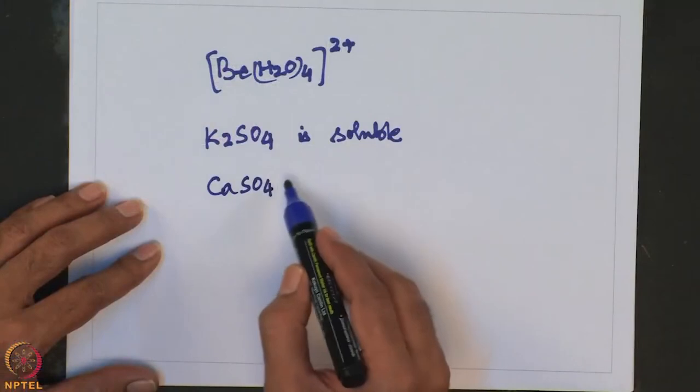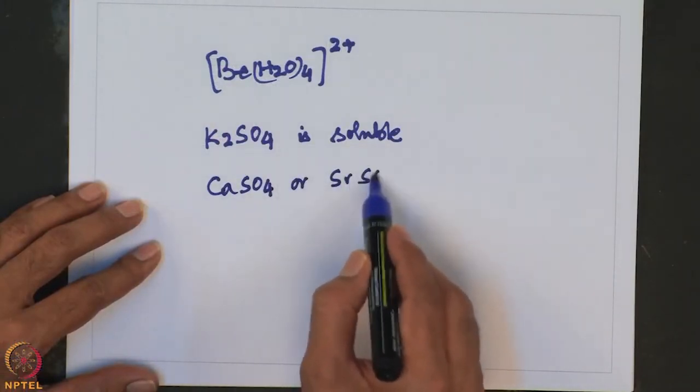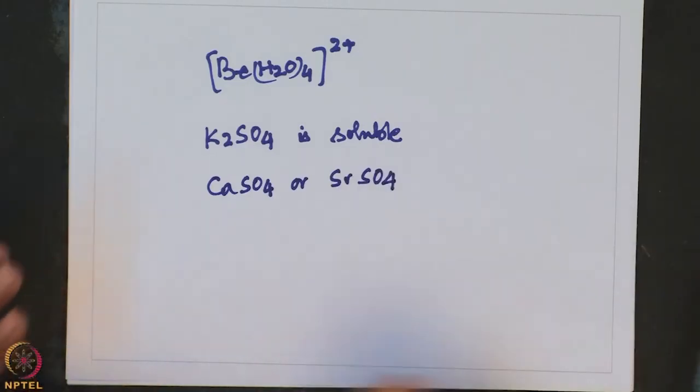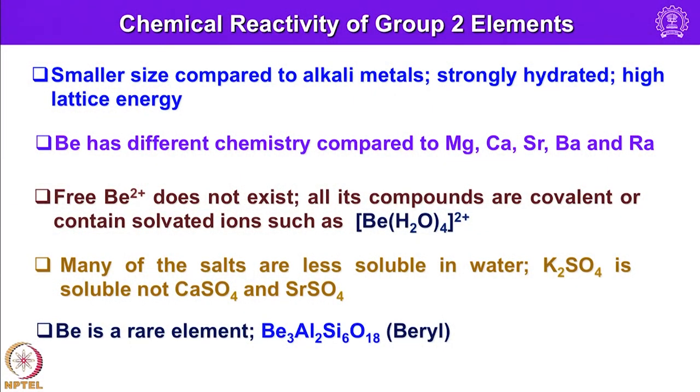For example, K2SO4 and Na2SO4 are soluble in water, whereas CaSO4 and SrSO4 are insoluble. The insolubility trend increases down the group — most barium salts are insoluble. Beryllium is a rare element; its important ore is beryl, Be3Al2Si6O18. In the next lecture, we will continue the chemistry of group 2 elements and begin with group 2 hydrides. Thank you, and have a pleasant inorganic chemistry reading.